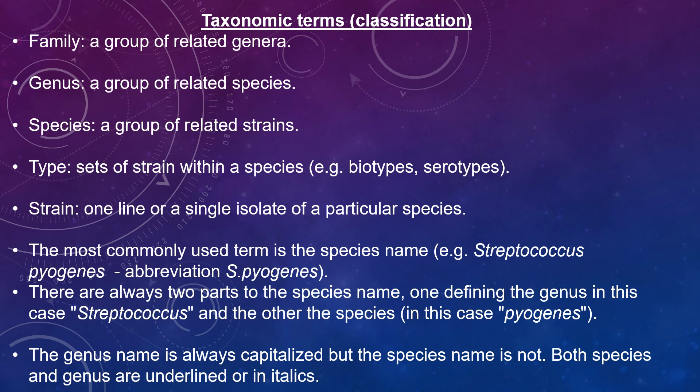Let's go through some taxonomic terms first. The family is a group of related genera. The genus is a group of related species. A species is a group of related strains. A type is a subdivision within a species — biotypes and serotypes are the most commonly used terms.